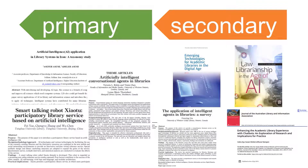Secondary sources might give us an overview of different types of AI technologies that a library might use, trends in the library sector around adopting AI technologies, or literature reviews on the use of AI in libraries or other sectors.